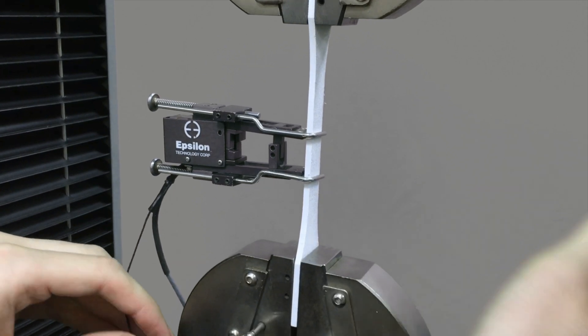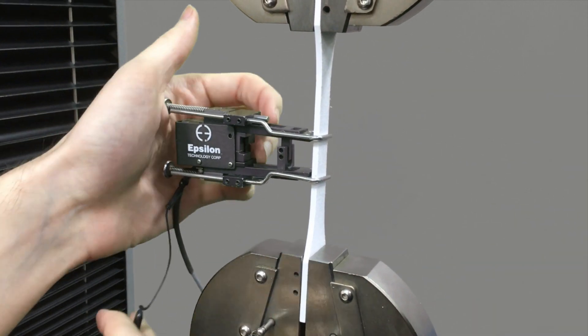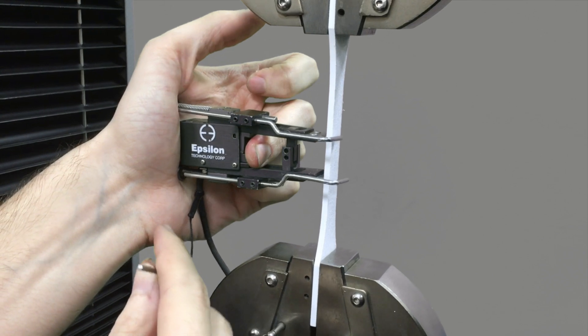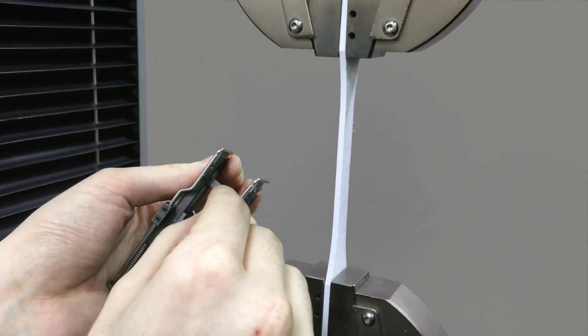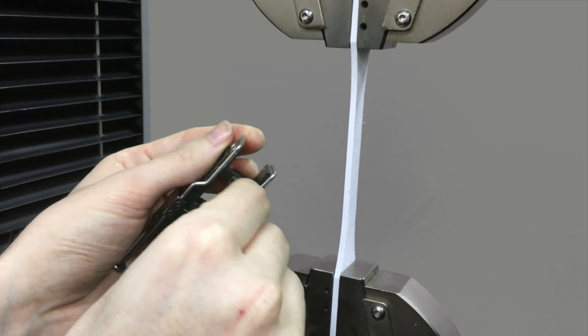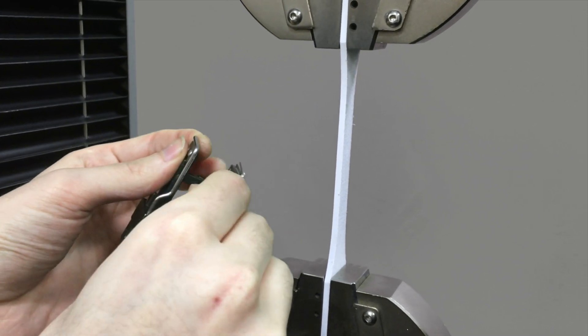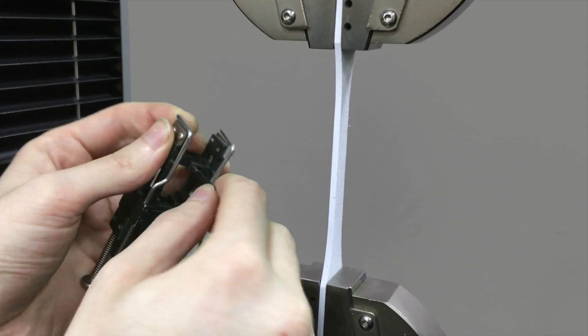So again, it's important that before placing your device on the sample, you set the gauge length using the provided indicator, in this case the pin.